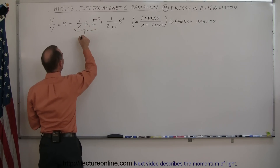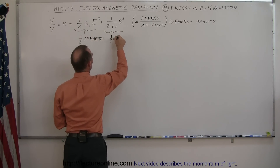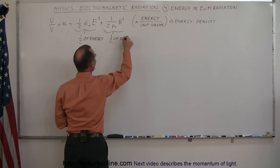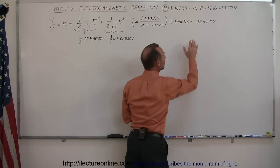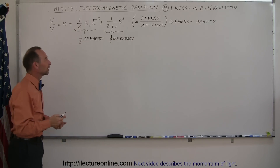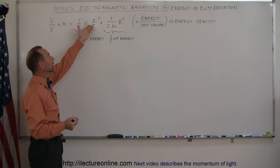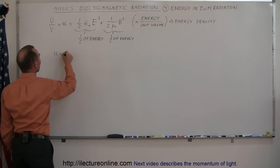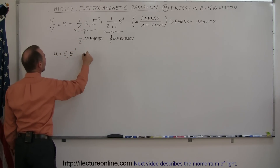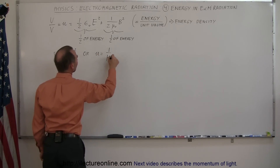Half of the energy is contained within the electric field oscillations, and half is contained within the magnetic field oscillations. We can also refer to this as energy density — how much energy per unit volume. We can describe the energy in terms of just either one by doubling either term: u equals epsilon-naught E squared, or u equals one over mu-naught times B squared.